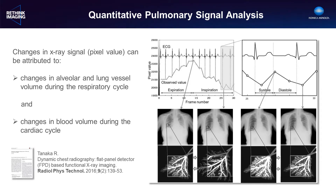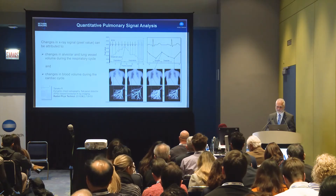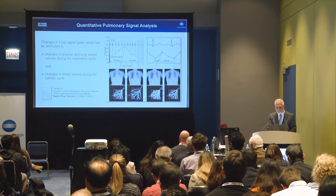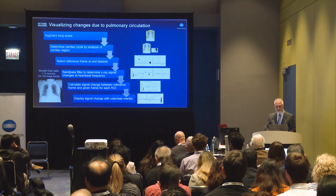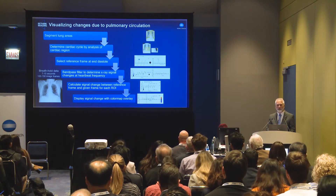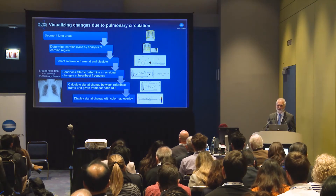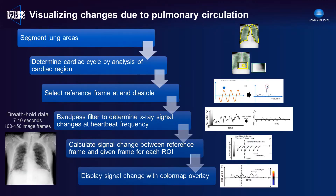It's been reported from MR studies that about 50% of the stroke volume is the blood volume change within the lungs over the cardiac cycle. With dynamic x-ray, we can have an algorithm where we're looking at changes in the blood volume within the lungs. We do this by segmenting out the lung areas, finding an ROI region over the cardiac border where we can use this to assess the cardiac heart rate.